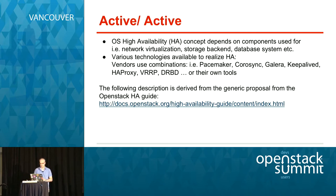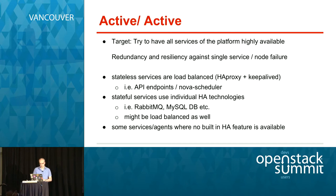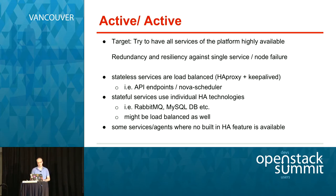Vendors and distributions offer different technologies or combinations to achieve high availability — combinations from Pacemaker, Corosync, HAProxy plus Keepalive, VRRP, Galera, and similar tools. The following description is derived from the OpenStack HA guide. The target of active-active high availability is to have more redundancy and more resiliency against single-node failures and single-service failures. For stateless services, they can be load-balanced; you could deploy multiple instances and use HAProxy plus Keepalive for an HA setup.